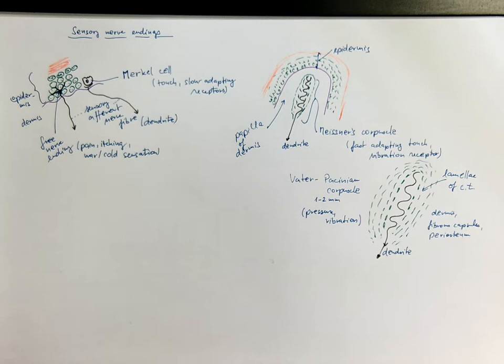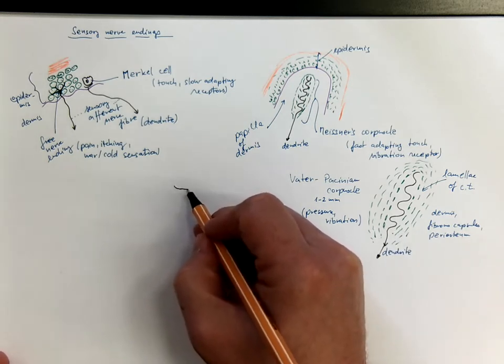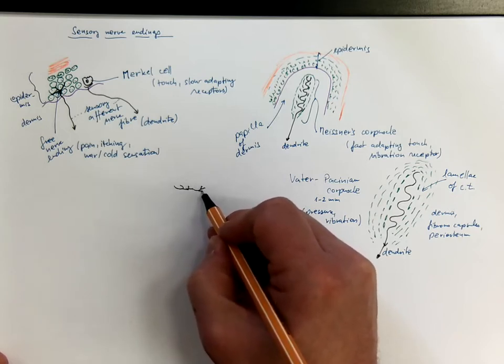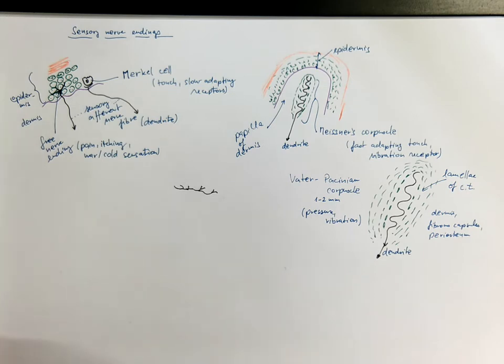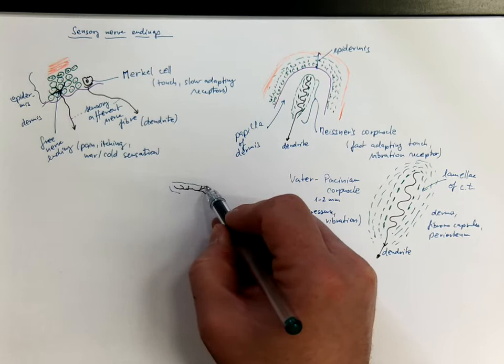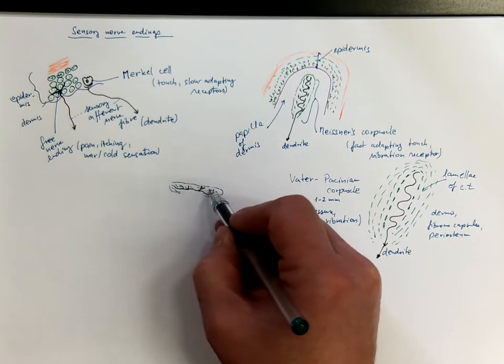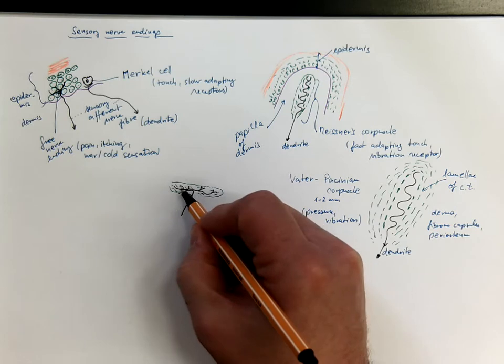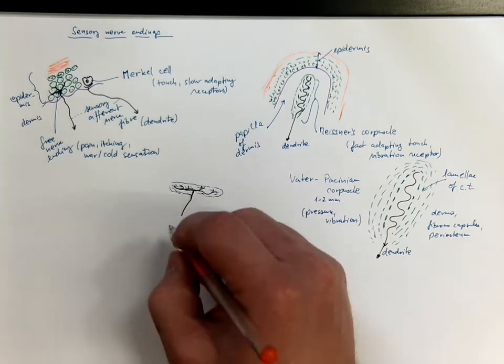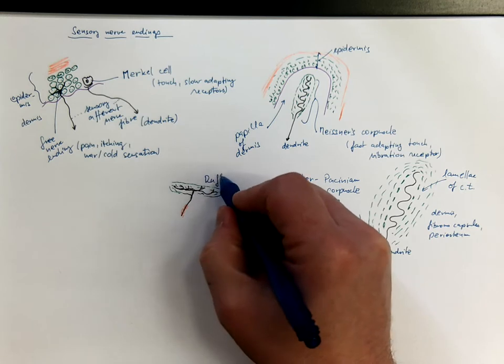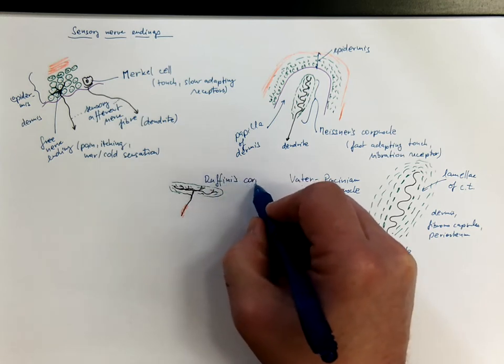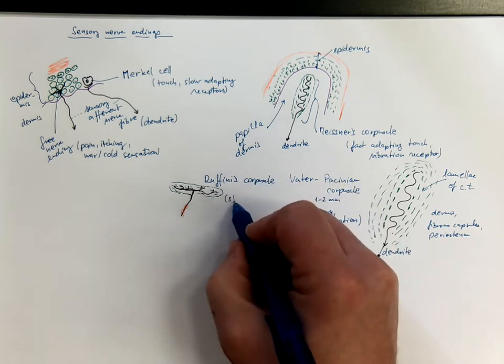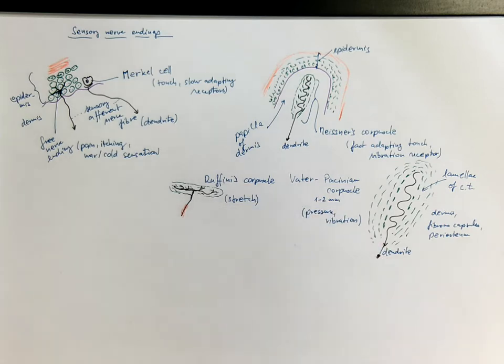And there are more sensory nerve endings. For example the Ruffini's corpuscle. With this shape they are more widely stretched. So here is the dendrite branched. Here is myelination. Ruffini's corpuscle. And they perceive stretch. In this context let's mention also some proprioceptors.